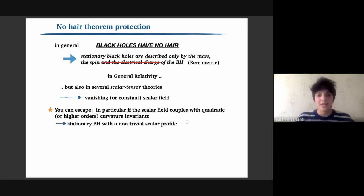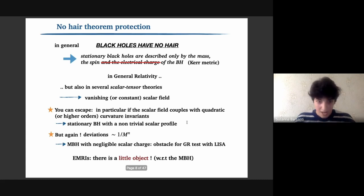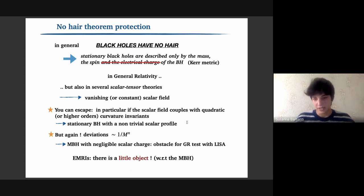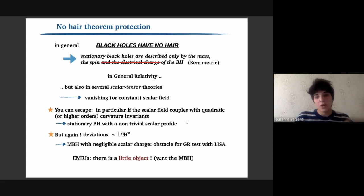A way to escape no-hair theorems can be found in theories where the scalar field couples with quadratic or Gauss-Bonnet curvature invariants, so that stationary black holes are endowed with a non-trivial scalar profile — we can say in a colloquial way that these black holes carry a scalar charge. However, even in these theories the deviation from GR goes as an inverse power of the mass of the black hole, meaning that for massive black holes the scalar charge is negligible. But in EMRIs, the little object compared to the massive black hole will carry a significant scalar charge.